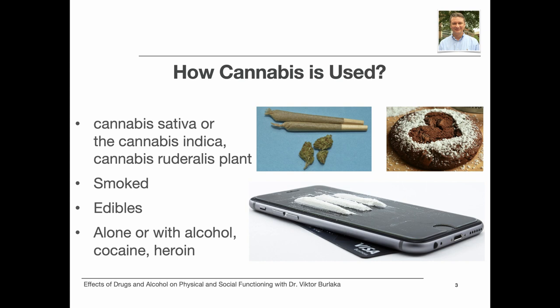Smoking delivers psychoactive chemicals quickly to the brain. Cannabis is also consumed as edibles — as baked goods, candy, infused cooking oil, or butter. This way, the psychoactive effects might not be experienced for one to three hours after ingestion. Cannabis products are most often used alone; however, individuals may use them with other substances such as alcohol, cocaine, or heroin. The effect will be stronger and sometimes the combined use may lead to opioid overdose. When used with stimulants such as cocaine, cannabis will soften the harsh effects of cocaine.